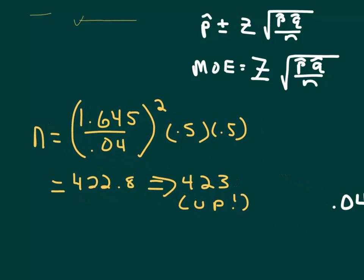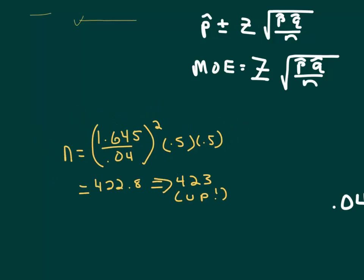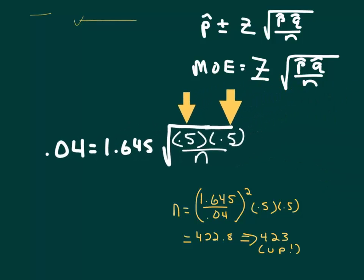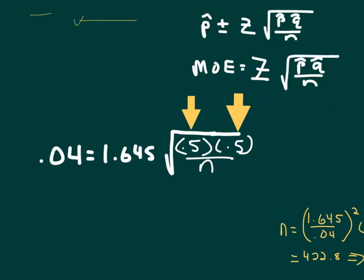So I've got the n, 1.645. Let me back up here. I need to put that one in first. So I had 0.04, that was my margin of error, equals 1.645. That goes with the 90% confidence. And then I used 0.5 for p because I don't have a pilot study, and then 1 minus that, which in this case is also 0.5. And then I'm going to solve for n.